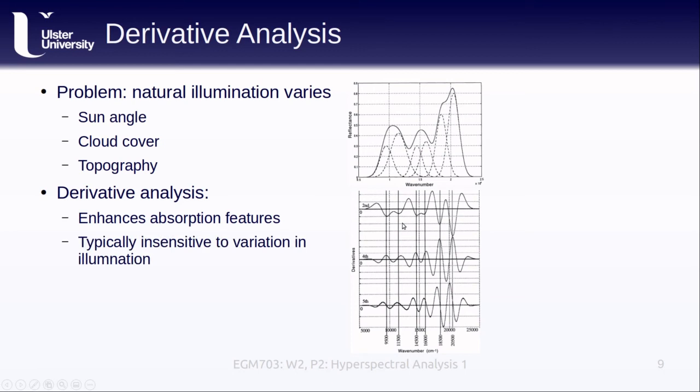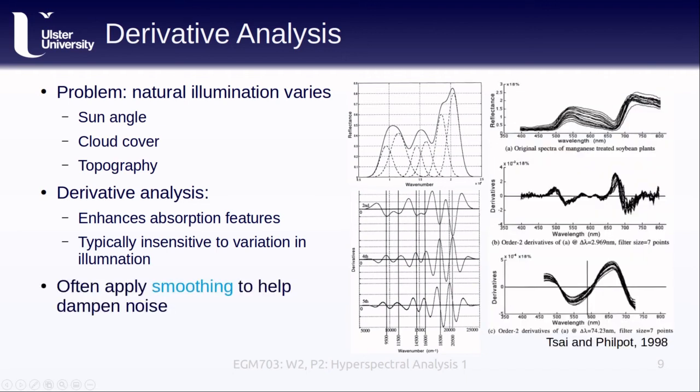So, with derivative analysis, we can enhance the absorption features, because the derivatives are typically insensitive to the variation in illumination. The real-world example here, with reflectance spectra of soybean plants treated with manganese, shows significant variation in reflectance depending on the illumination. Once we start taking derivatives, we see that these differences are minimized. To help dampen the noise that is often present in the curves, we can also apply different smoothing techniques. The paper referenced here looked at a number of different techniques to aid in the derivative analysis.